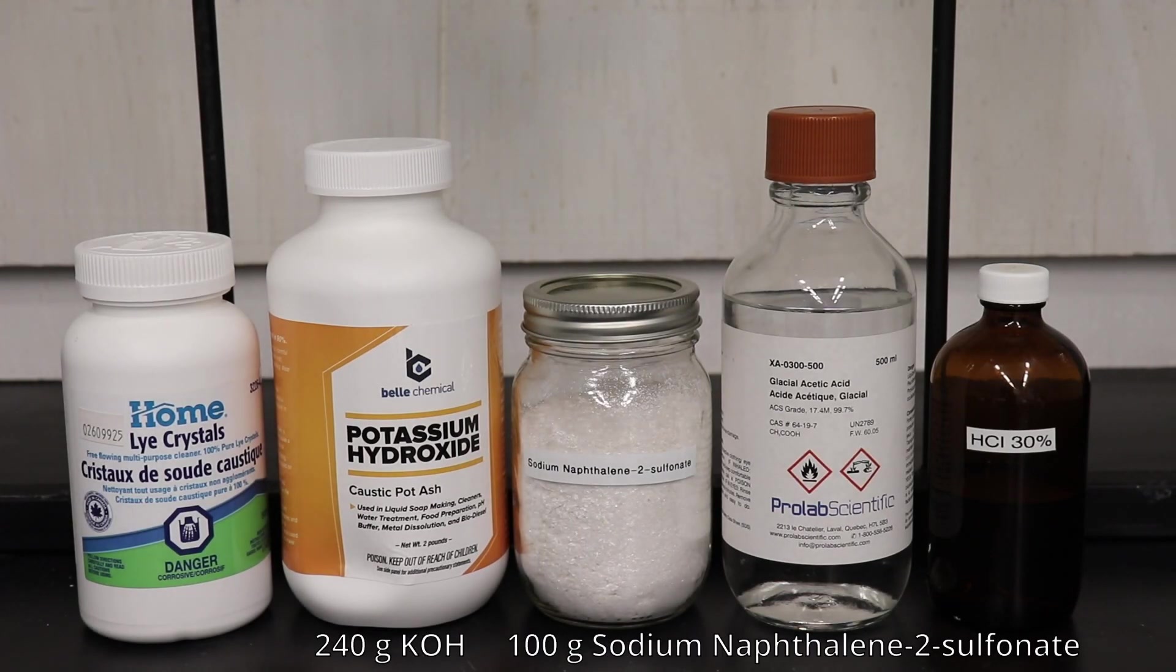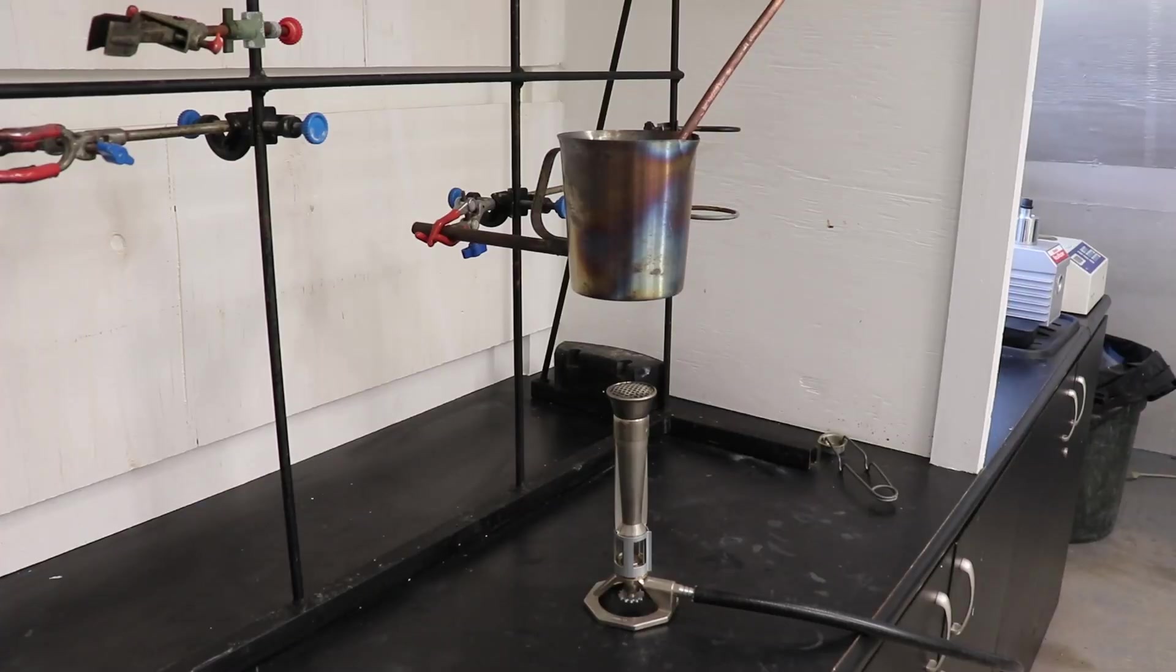The main reagents for this preparation are 240 grams of potassium hydroxide, 100 grams of the previously prepared sodium naphthalene 2-sulfonate, as well as sodium hydroxide, glacial acetic acid, and hydrochloric acid.